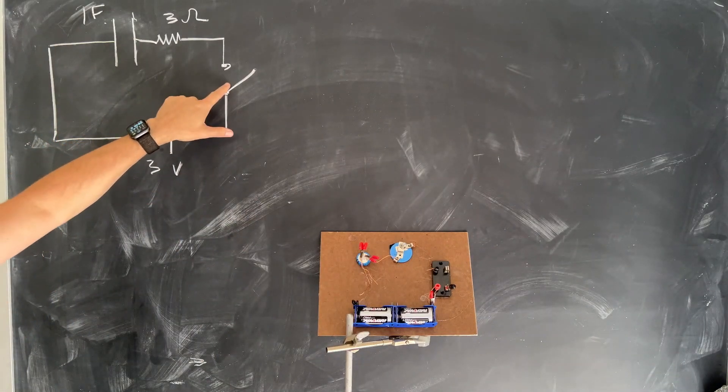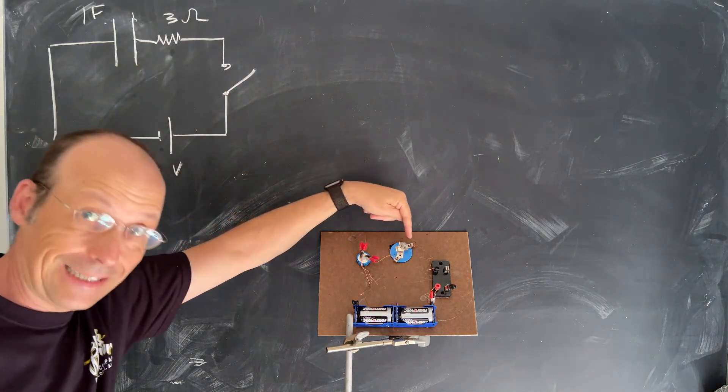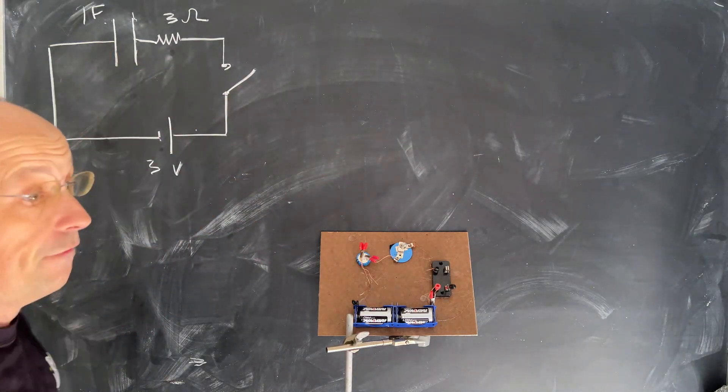We have a 3 volt battery, we have a switch, we have a 3 ohm resistor which is this light bulb, and then we have a 1 farad capacitor.